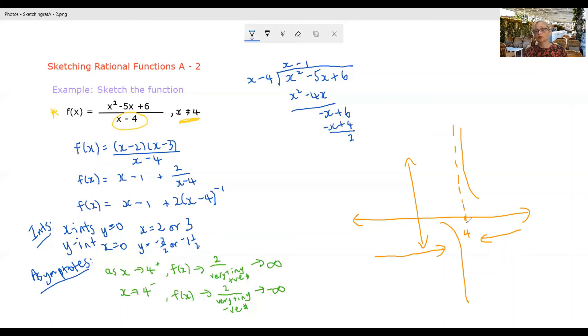So that tells me, that is sufficient to tell me that yes, I do have a vertical asymptote at x equals four.